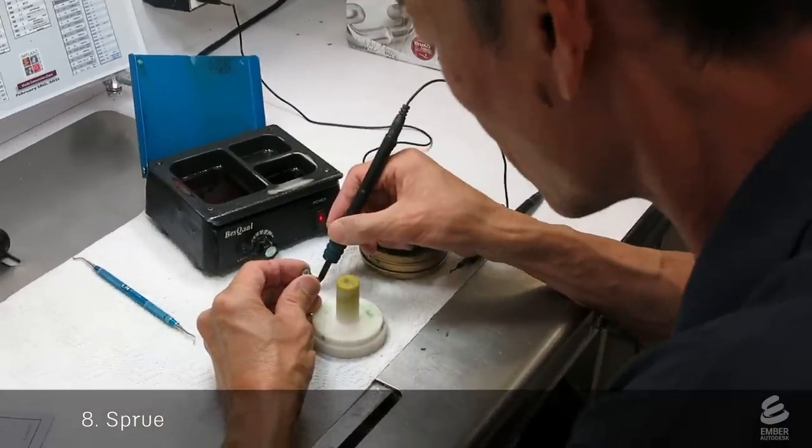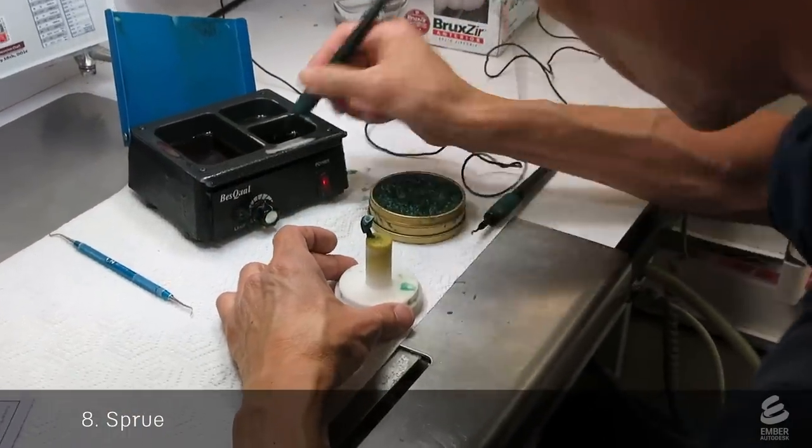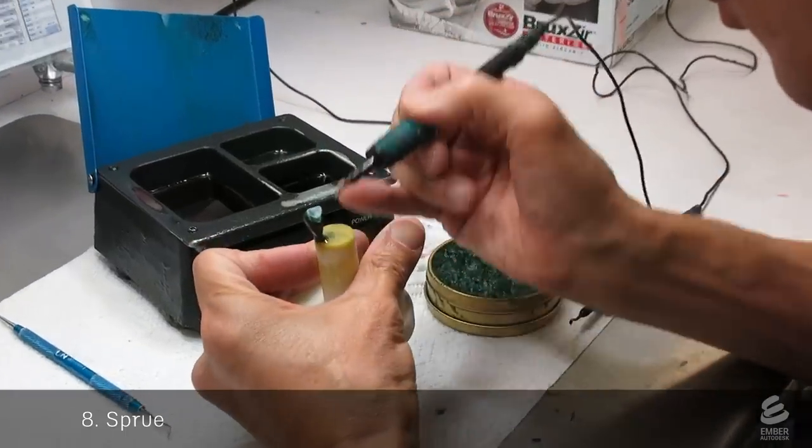Another technician sprues the crown. They use wax to attach it to a stem. This will create a passage for metal to flow into the crown during the casting process.